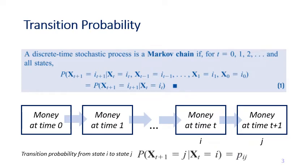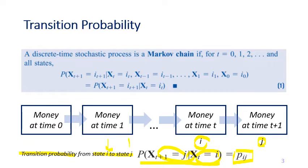Now, if we define the probability that at time t you have i dollars and in the next time step you have j dollars, you can write it as: probability that at time t plus one you have j dollars, given that at time t you have i dollars. We can simplify this as p_ij. So p_ij is the probability that in the previous time we have i dollars and in the next time step we will have j dollars. We also call this a transition probability — from state i to state j, from having i dollars to having j dollars in the next time step.